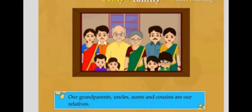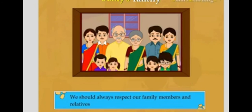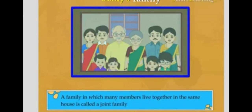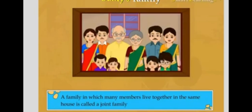Remember that our grandparents, uncles, aunts, and cousins are our relatives. We should always respect our family members and relatives. There are ten members in Bunty's family. So we can say that a family in which many members live together in the same house is called a joint family.